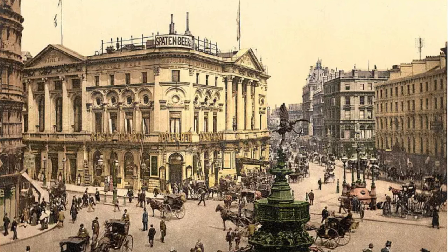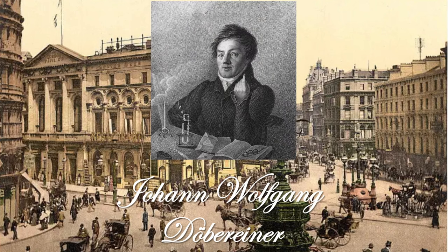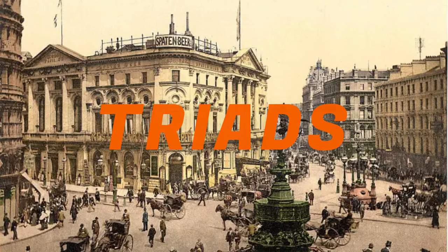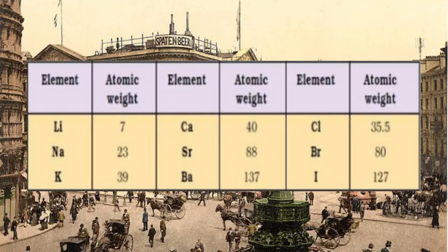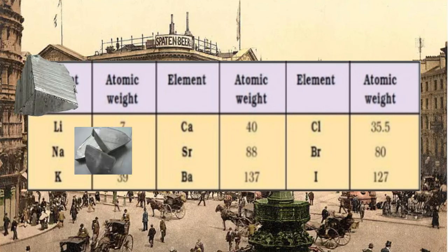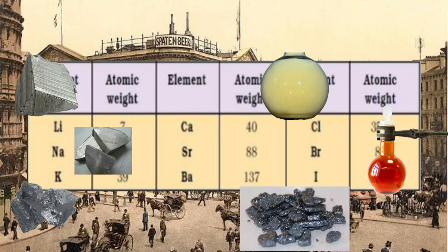A few years later, German physicist Johann Wolfgang Döbereiner classified the elements by grouping them into groups of three called triads, in order of increasing atomic weight and the weight of the middle element generally being the mean of the other two. Some examples are lithium, sodium and potassium, chlorine, bromine and iodine.